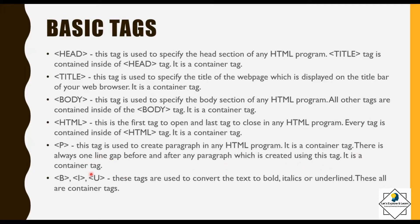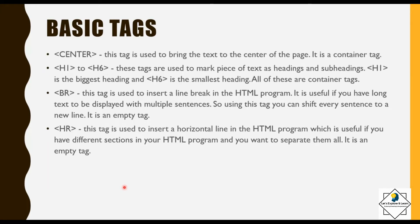Bold, italics, and underline tags are used to convert text to bold, italics, or underlined — all are container tags. The center tag brings text to the center of the page. H1 to H6 tags mark text as headings and subheadings; H1 is the biggest and H6 is the smallest. The BR tag inserts a line break, useful for shifting sentences to new lines — it is an empty tag. The HR tag inserts a horizontal line to separate sections — also an empty tag. Now let's see one example covering all these tags.